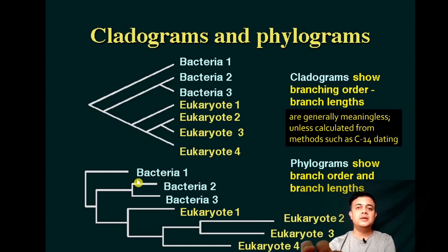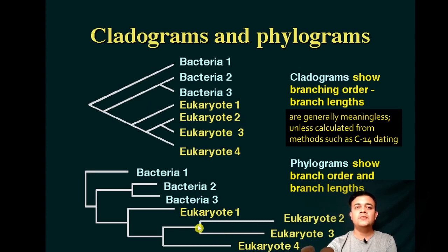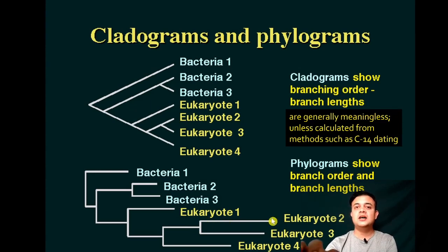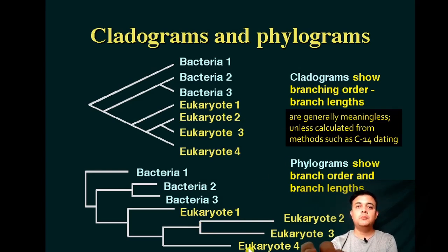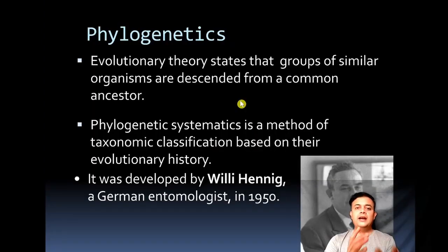When branch lengths are drawn proportional to substitutions per site, it is called a phylogram. Phylograms are more informative than cladograms — you can see, for instance, that eukaryote two is further from the most recent common ancestor than eukaryote three, because its branch length is longer. Phylograms provide both topological information and branch-length-based evolutionary distance information.